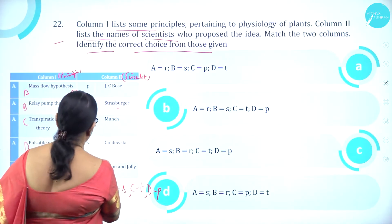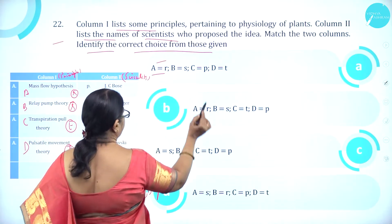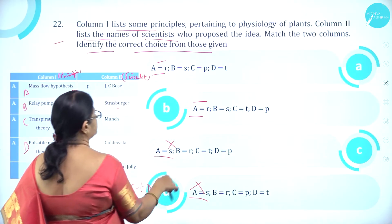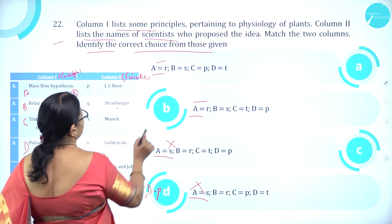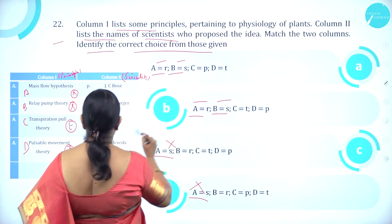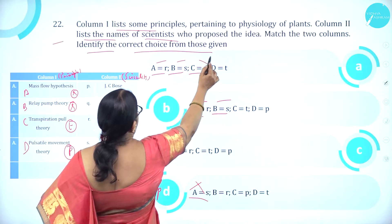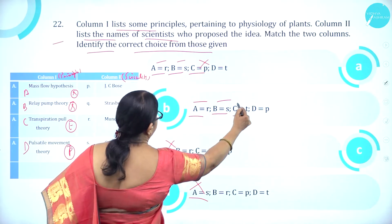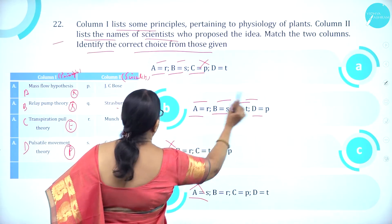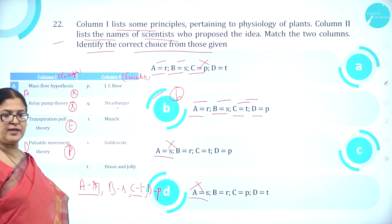Verifying against the options: A is R — correct here. B is S — correct here. C is T — correct here. D is P — correct here. So option B is the correct option.